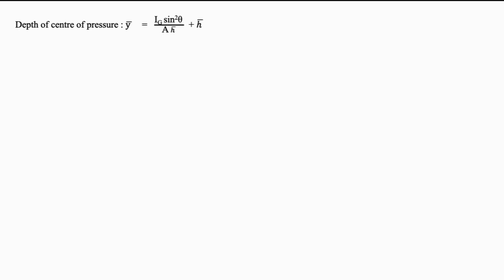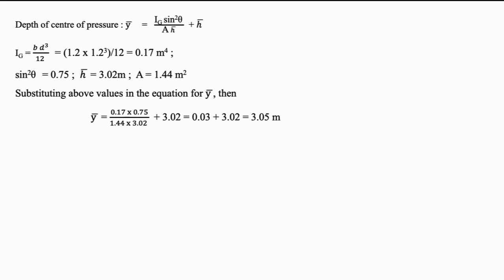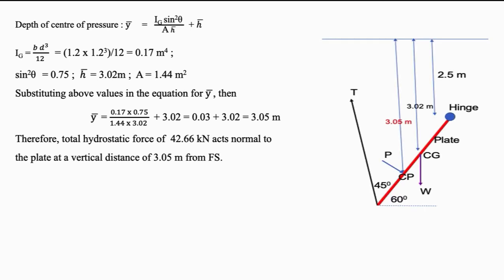Now determining the position of center of pressure Y-bar: Y-bar equals IG sin²theta by (A H-bar) plus H-bar. IG equals 0.17 m⁴. Sin²theta equals 0.75. Substituting these values, Y-bar equals 3.05 meters from the free surface. Therefore the total hydrostatic force of 42.66 kN acts normal to the plate at a vertical distance of 3.05 meters from the free surface.